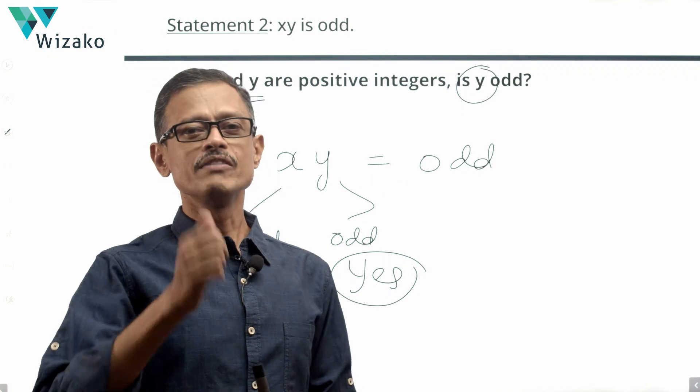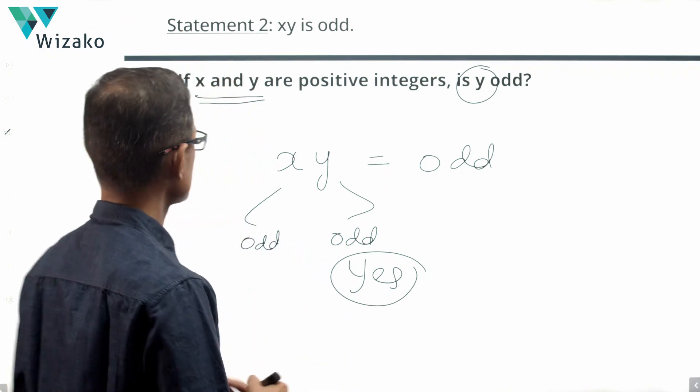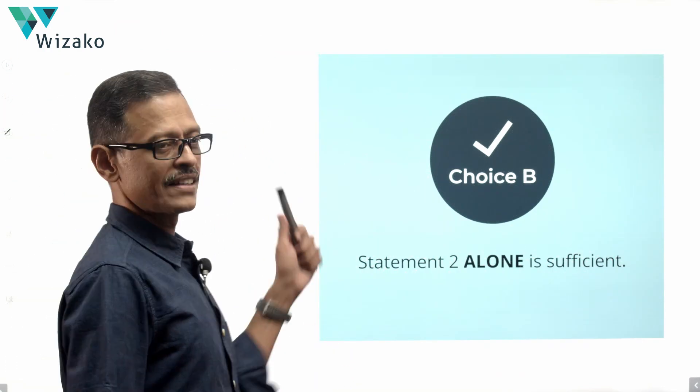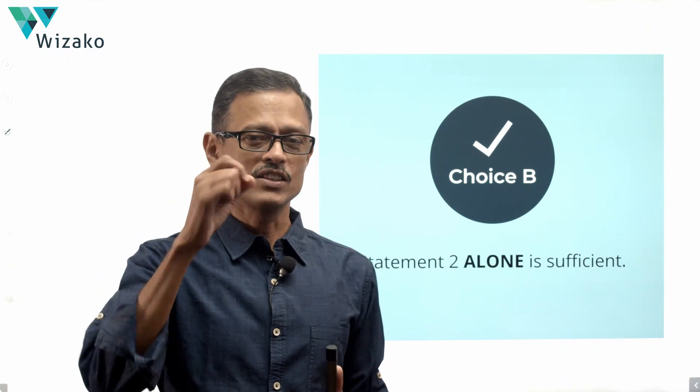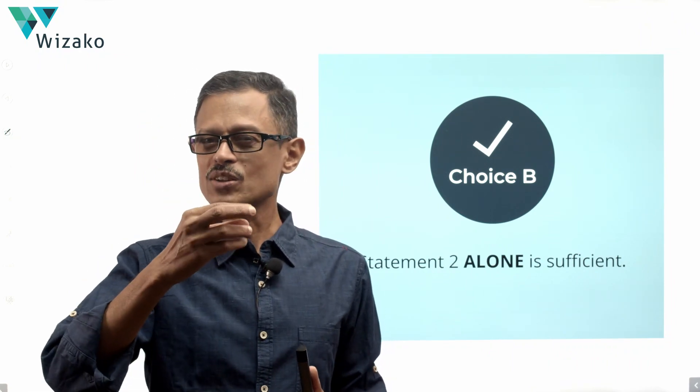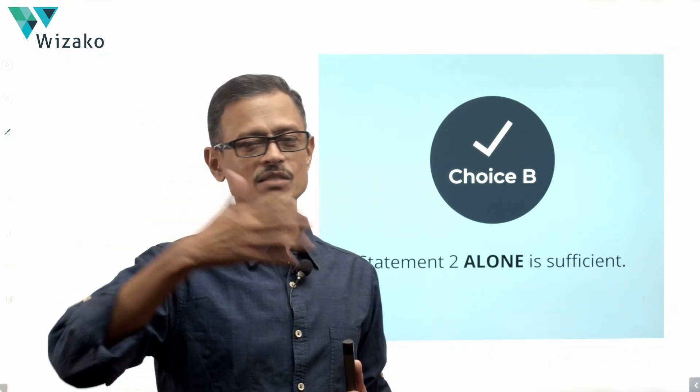Two alone is sufficient. Choice B is the answer. Statement C is the trap in this question. That's what makes this question closer to a 600 level question. Otherwise, it's a much easier question.